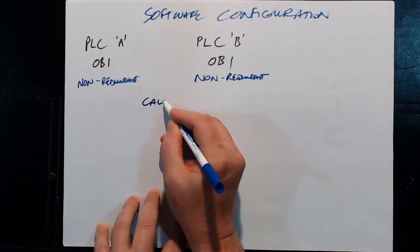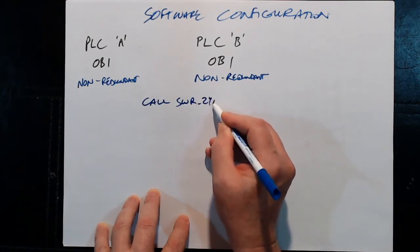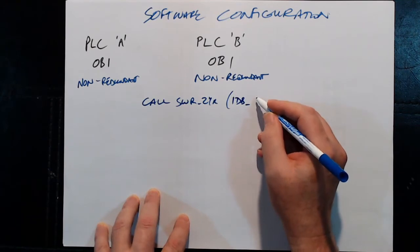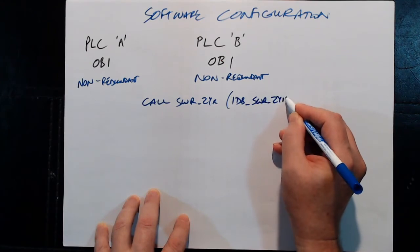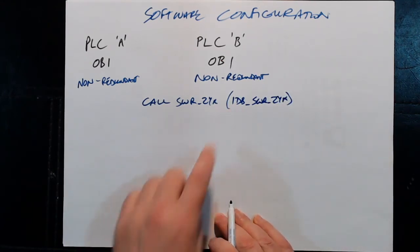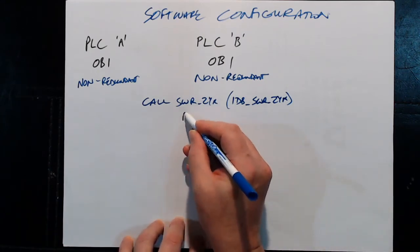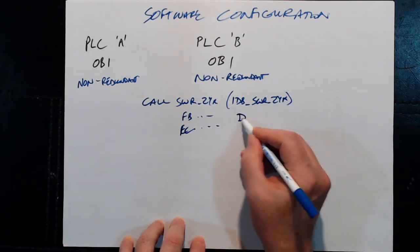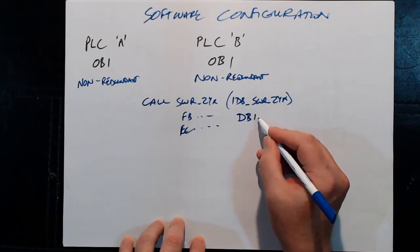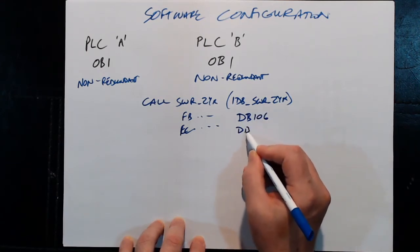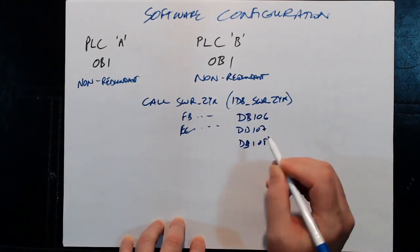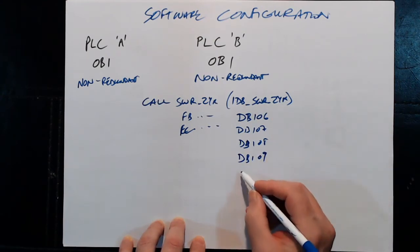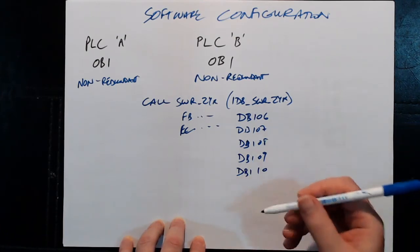There's a call to SWR_ZYK. And in there we call an instance DB. It's called IDB_SWR_ZYK. And we call that function block with that instance DB. Then we have FB and FC and what, what, what, and a couple of, then some DBs. DB, let's for argument's sake call it 106, and DB 107, DB 108. These are all global and instance DBs for these FBs and FCs. DB 109, and they are contiguous. DB 110. It depends on how many you need. You do as many as you require.